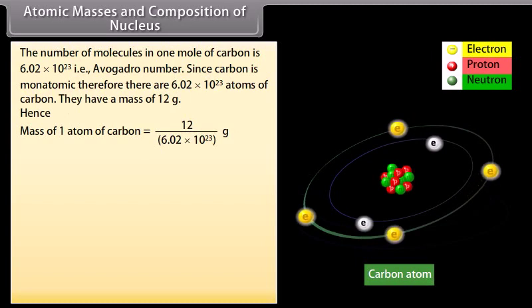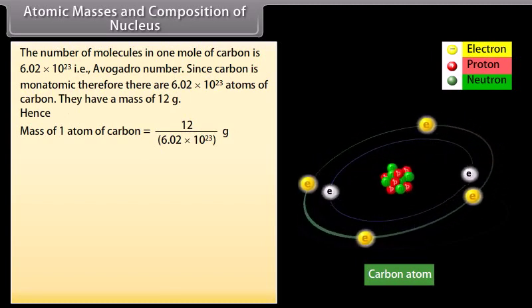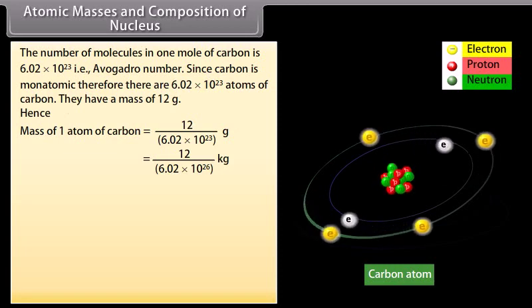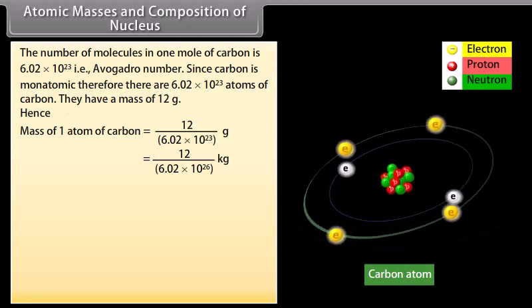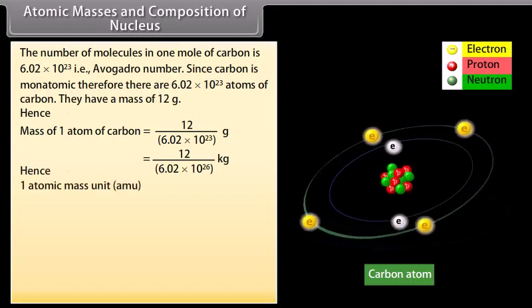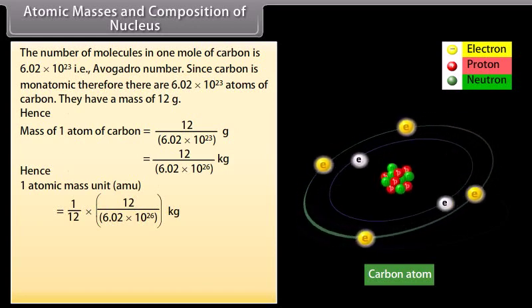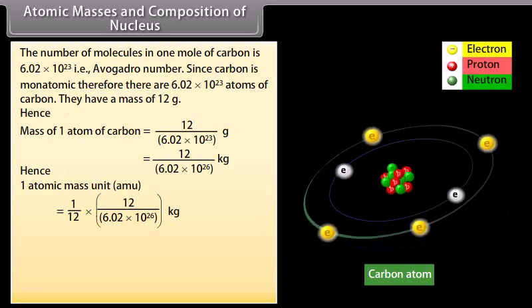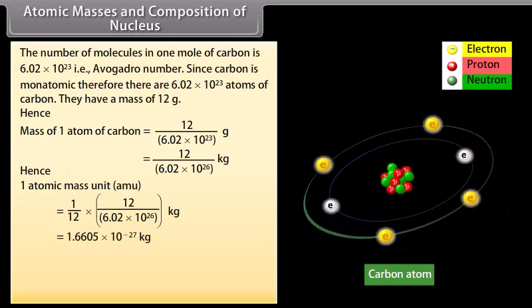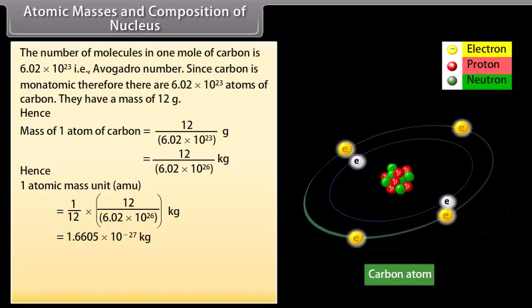Hence, mass of 1 atom of carbon is equal to 12 by 6.02 × 10²³ gram, which is equal to 12 by 6.02 × 10²⁶ kilogram. Hence, 1 atomic mass unit is equal to 1 by 12 into 12 by 6.02 × 10²⁶ kilogram, which is equal to 1.6605 × 10⁻²⁷ kilogram.